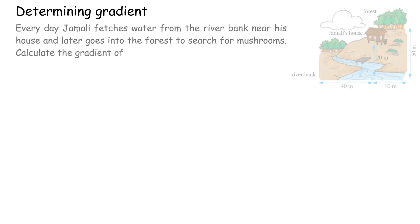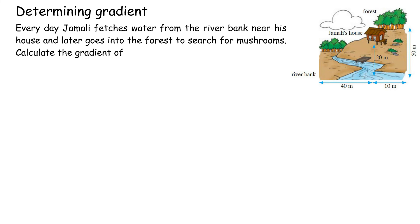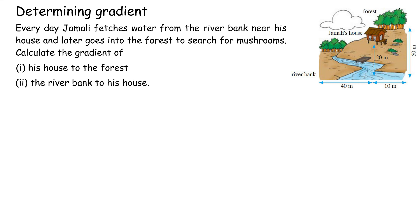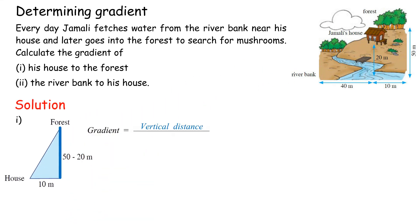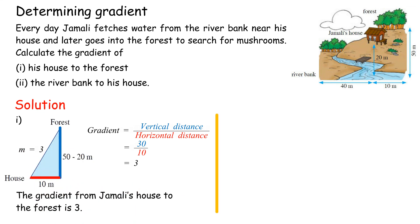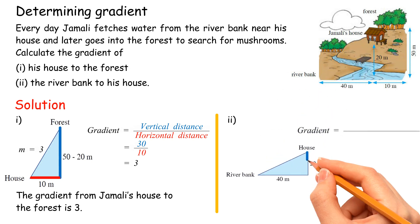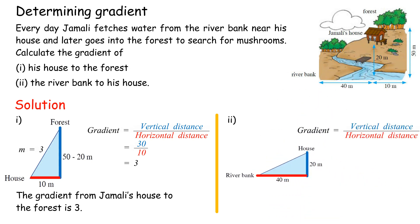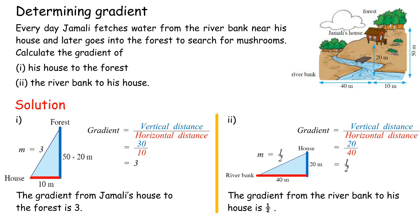Determining gradient: Every day Jamali fetches water from the riverbank near his house and later goes into the forest to search for mushrooms. Calculate the gradient of: 1. his house to the forest; 2. the riverbank to his house. Solution 1: Gradient equals vertical distance over horizontal distance equals 30 over 10 equals 3. Thus, the gradient from Jamali's house to the forest is 3. Solution 2: Gradient equals 20 over 40 equals 1 over 2. Thus, the gradient from the riverbank to his house is one half.